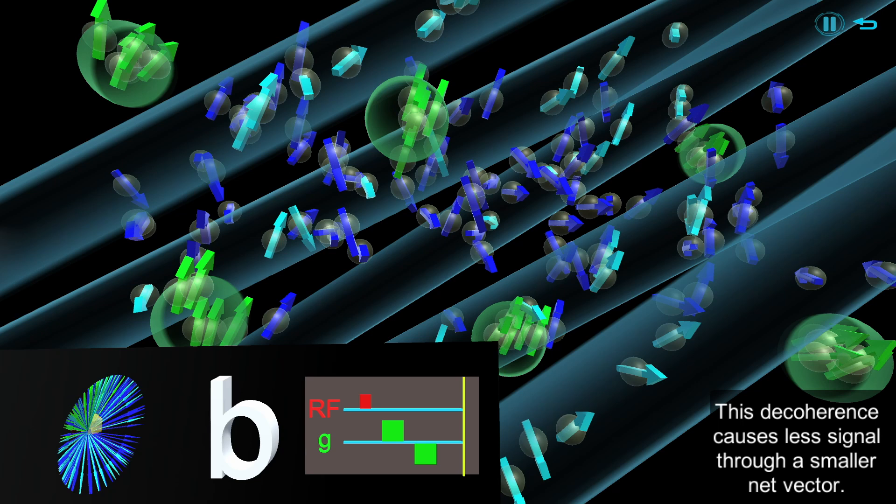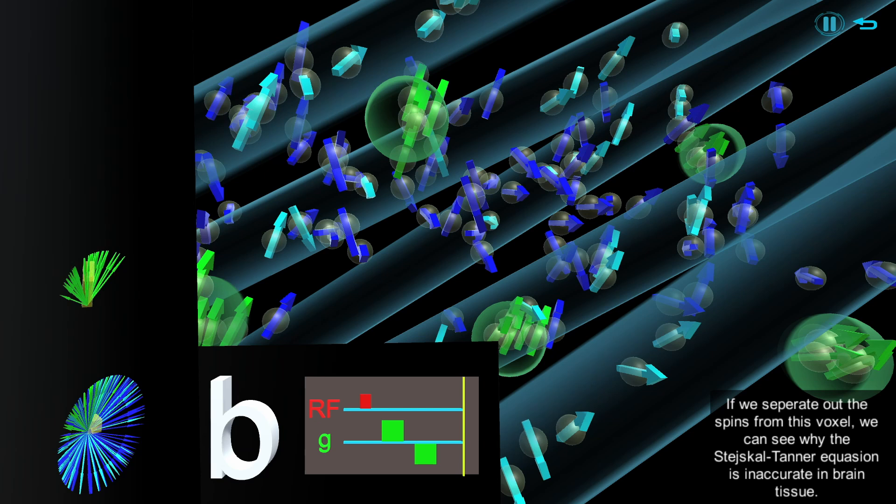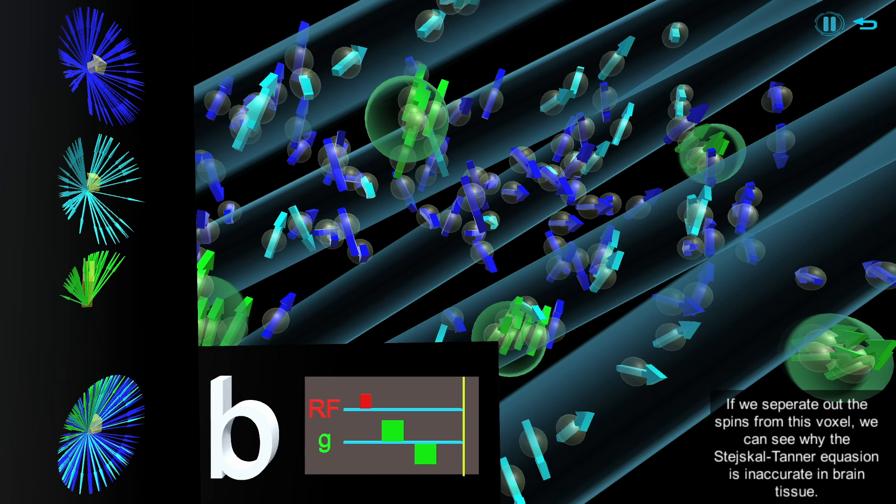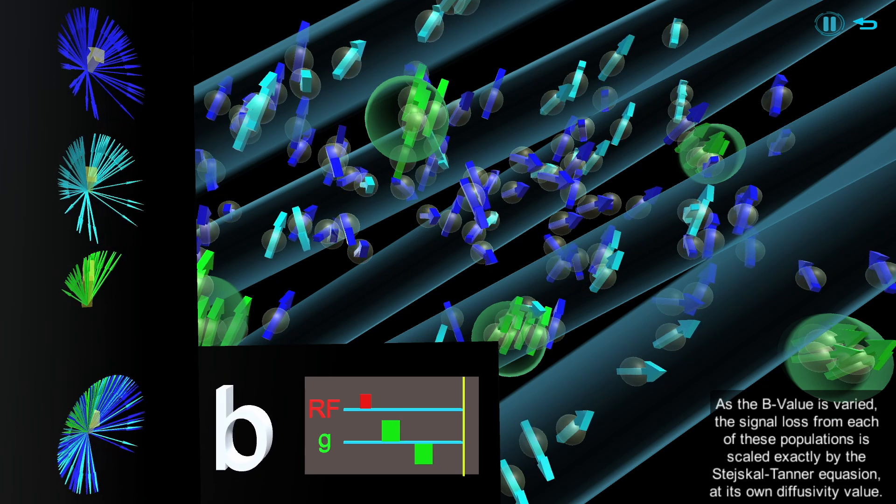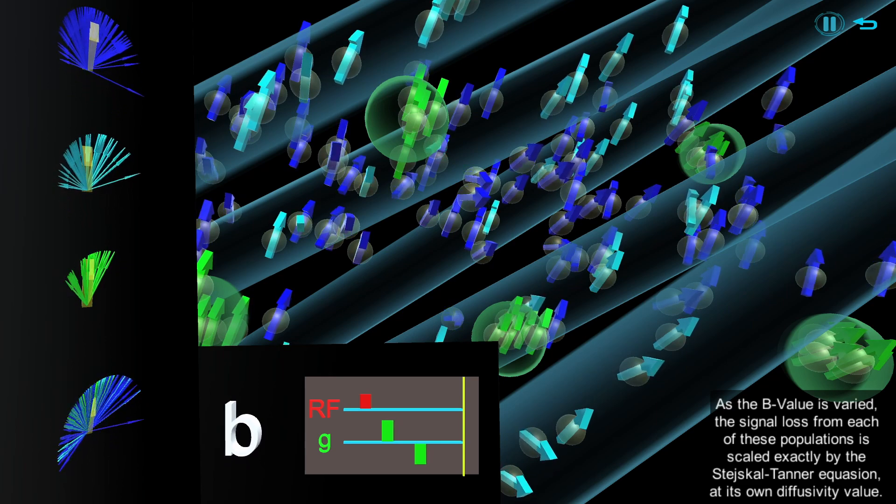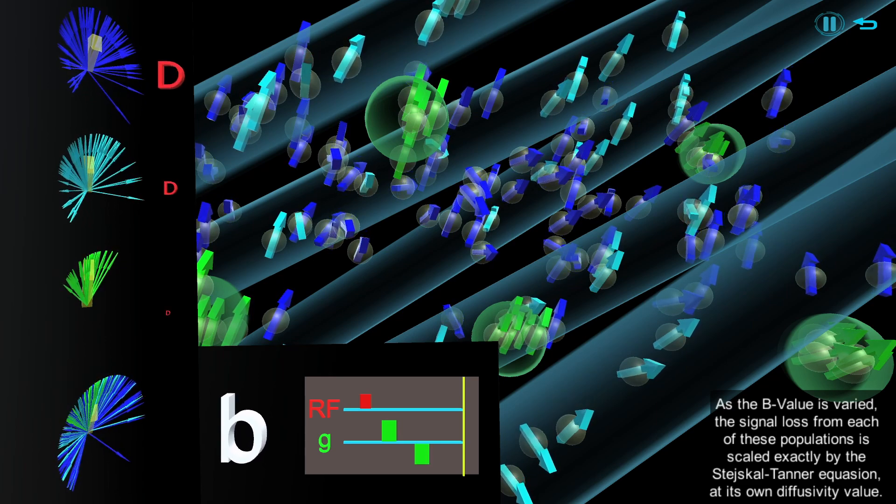If we separate out the spins from this voxel, we can see why the Stejskal-Tanner equation is inaccurate in brain tissue. As the b-value is varied, the signal loss from each of these populations is scaled exactly by the Stejskal-Tanner equation at its own diffusivity value.